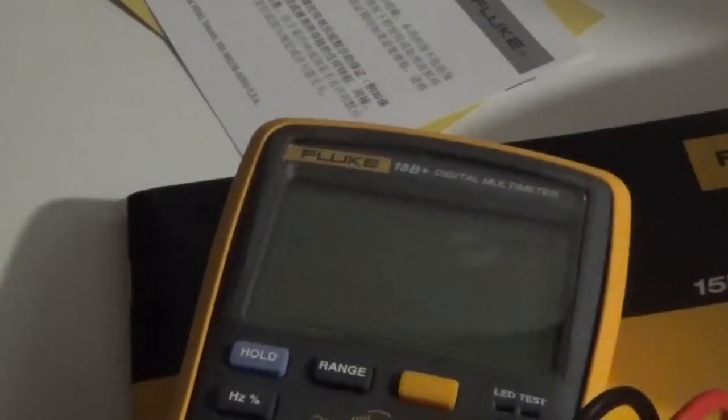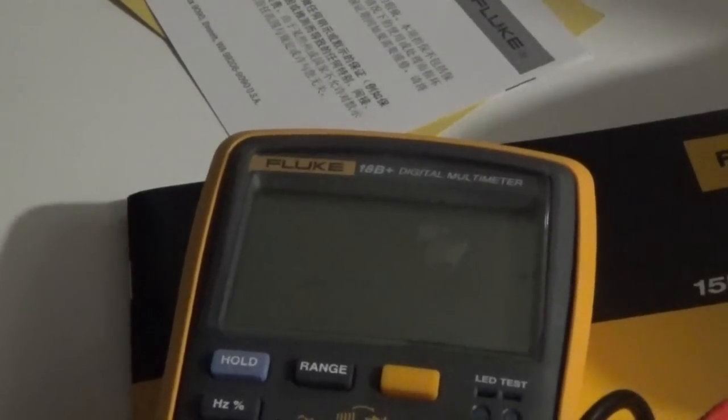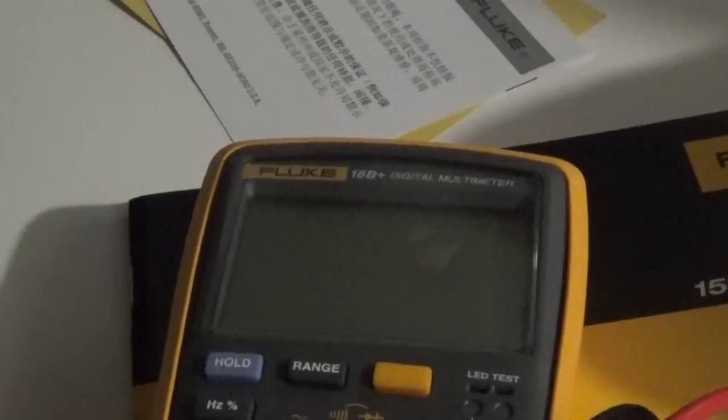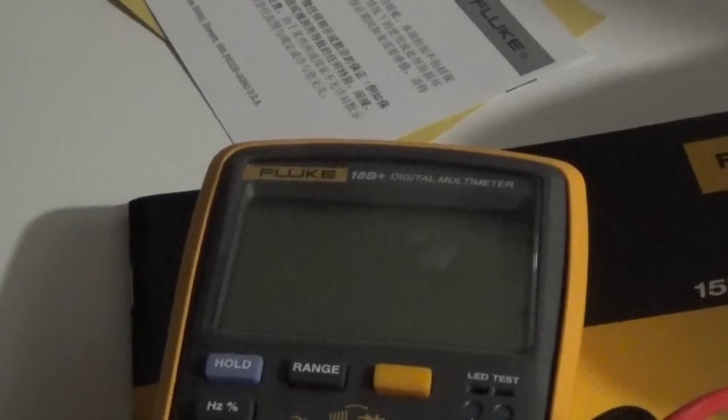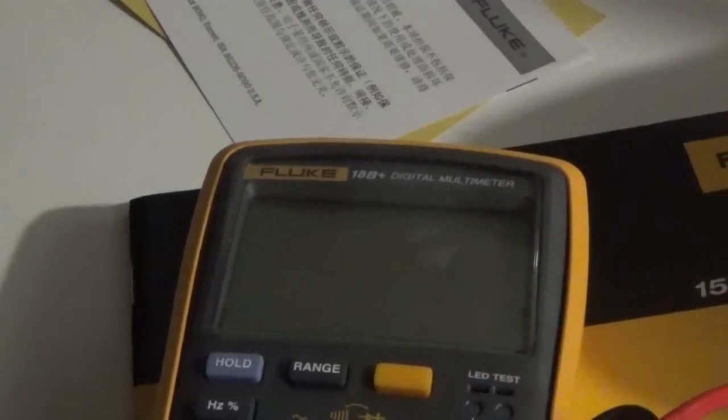So I thought well I'll get a Fluke, I'll get a decent one and shop around. I had a look on eBay and a Fluke base model 189 or whatever is fairly expensive, a couple of three hundred dollars. I'm thinking oh that's a bit much, then I saw this.